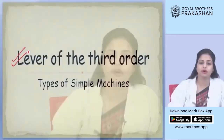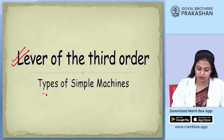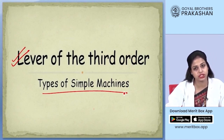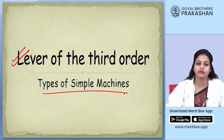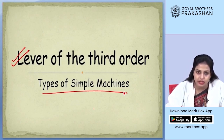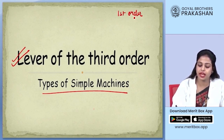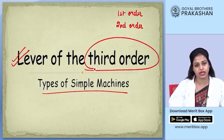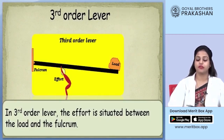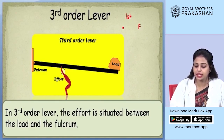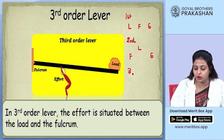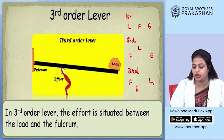Now we are going to start with the topic called lever of the third order. This falls under the unit of types of simple machine under the theme of energy. We have already discussed first order and second order levers. In third order lever, the effort is placed in between the fulcrum and the load. For first order, the fulcrum is between effort and load; for second order, the load is between fulcrum and effort; but in third order, the effort is between the fulcrum and the load.